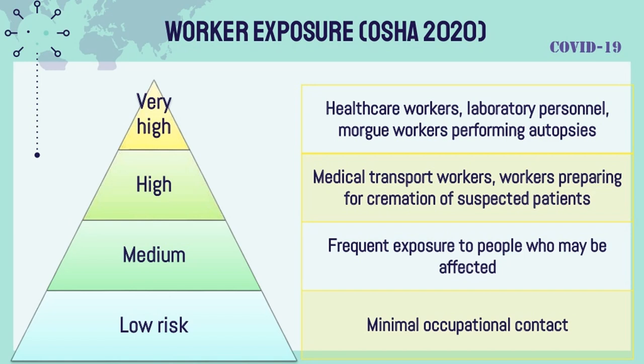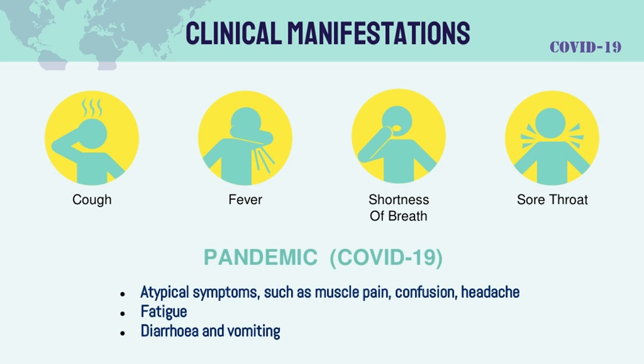Worker exposure (OSHA 2020) risk levels range from very high to high to medium to low. Very high risk includes healthcare workers and laboratory personnel. High risk includes morgue workers performing autopsies and medical transport workers. Medium risk includes workers preparing for cremation of suspected patients and those with frequent exposure to people who may be affected. Low risk involves minimal occupational contact.